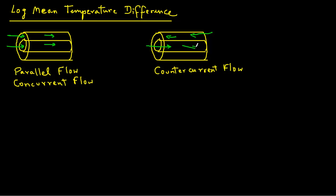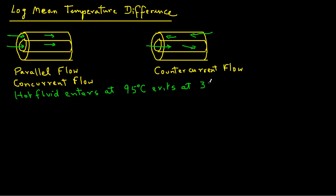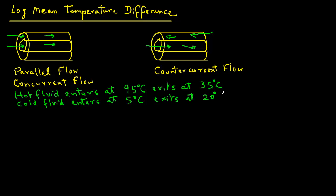Let's look at an example. We are given these conditions: a hot fluid enters at 95°C and exits at 35°C. Cold fluid enters the heat exchanger at 5°C and exits at 20°C. In this problem, we are not told what type of flow we have, so we will consider both parallel flow and counter flow.